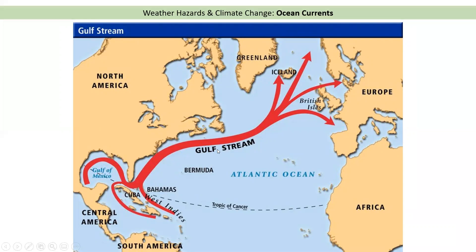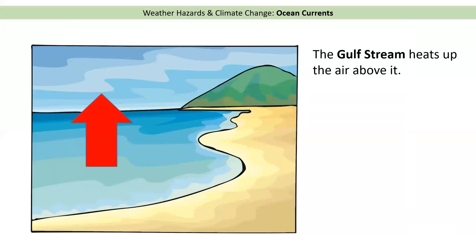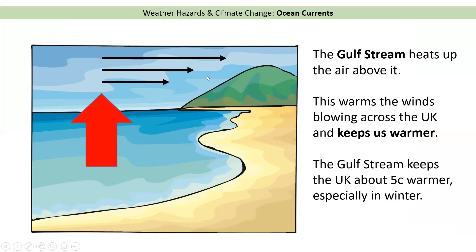Sometimes it's called the North Atlantic Drift but we normally know it as the Gulf Stream. The Gulf Stream brings warm water to the UK, that warm water heats up the air above it, and then the winds that blow over the UK bring that warmth across the UK and warm it up. The Gulf Stream keeps us about five degrees warmer than we would otherwise be. So thinking back to those pictures of Newfoundland and the Isles of Scilly, the main reason for that different climate is because the Gulf Stream, a warm ocean current, comes towards the UK from the Caribbean and keeps us much warmer.